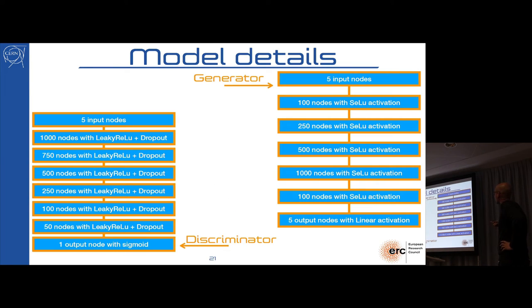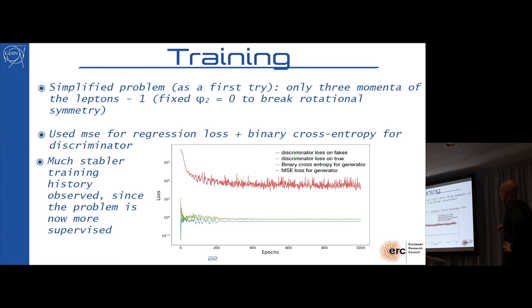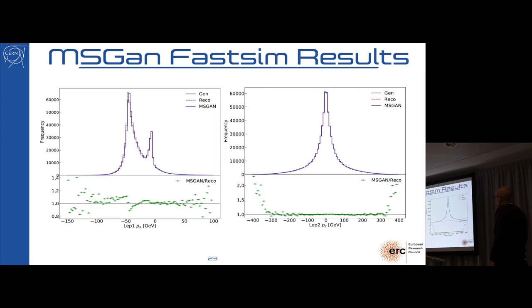This works well for those quantities that I showed you before for which the difference between GAN and Rico is small, because you are basically learning a very narrow local smearing function, while it doesn't work well for the others. The first step that we did was to simplify the problem, so we focused only on the four momenta of these objects. We do see that this works okay, in the sense that this regression step is actually helping the generator to get to a stable performance, and the training history is a little bit more well behaving.